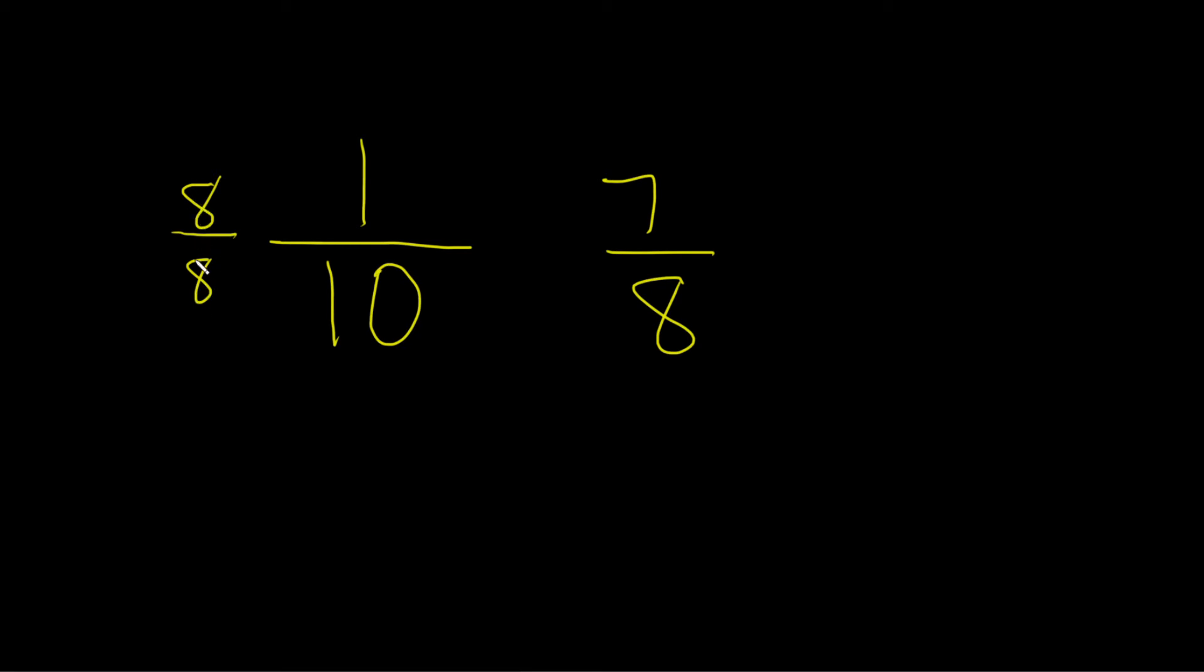We're basically multiplying by 1. 8 over 8 is 1. Then you put a times here. So 8 times 1, now you multiply across is 8. 8 times 10 is 80.